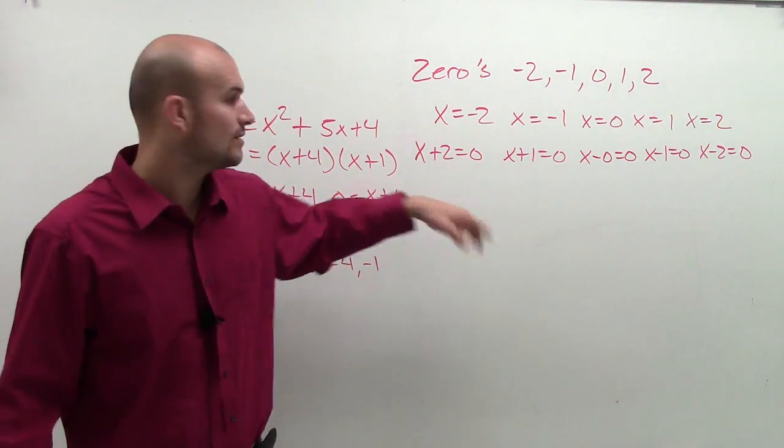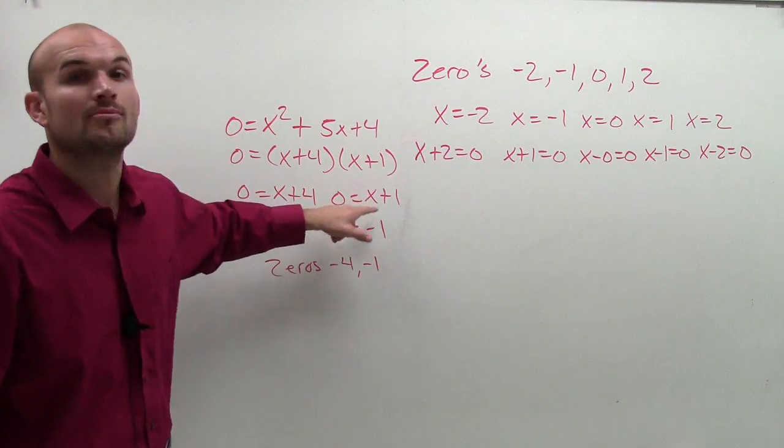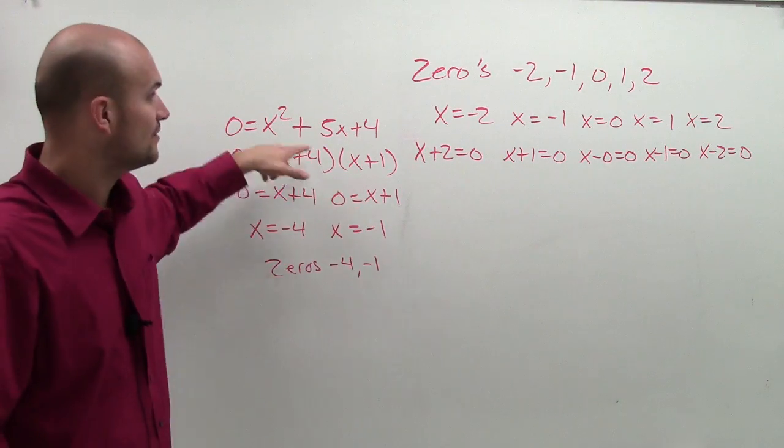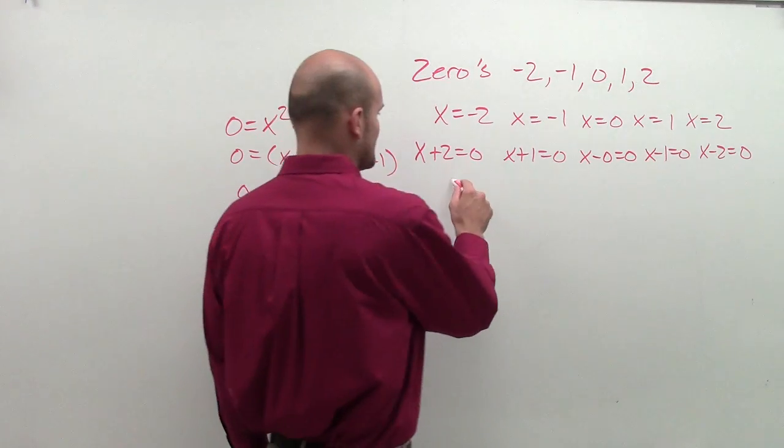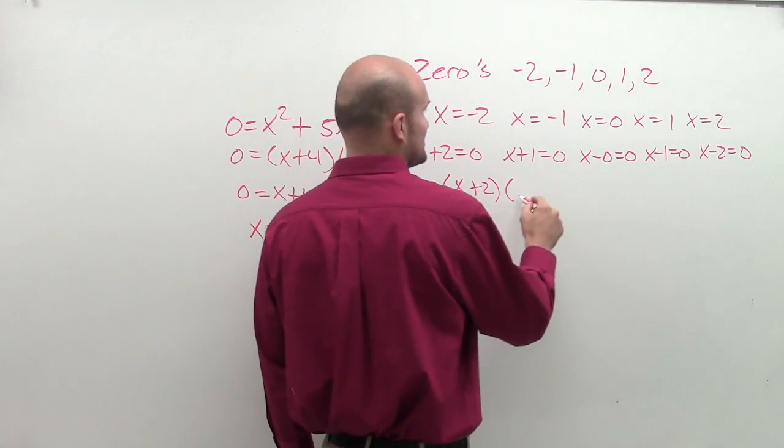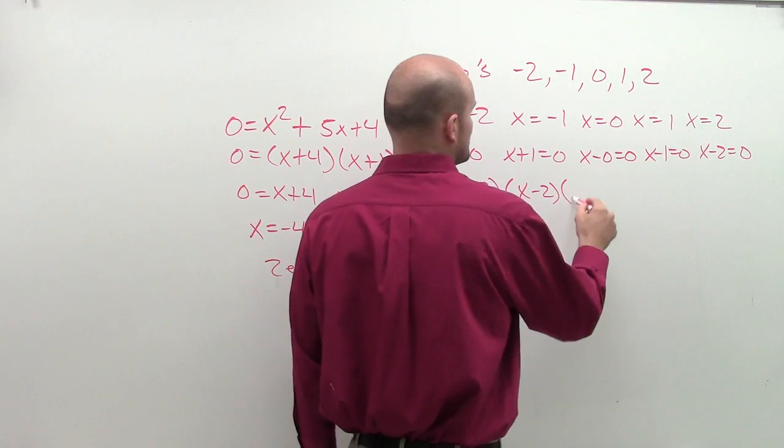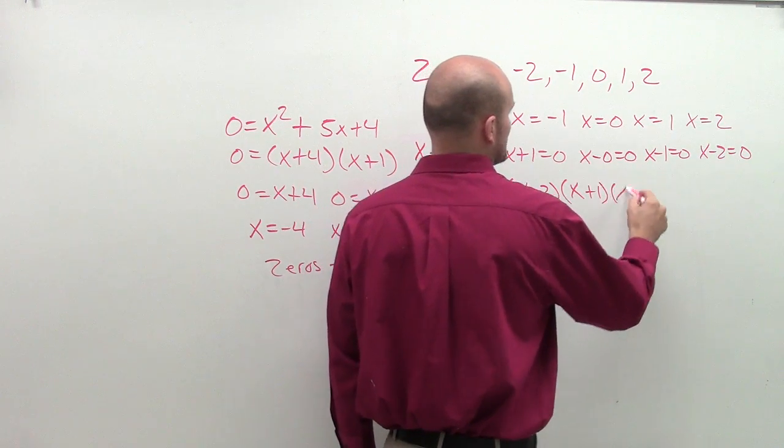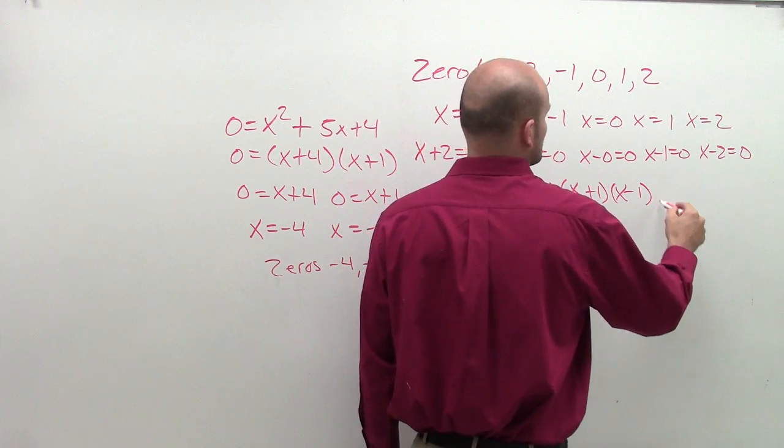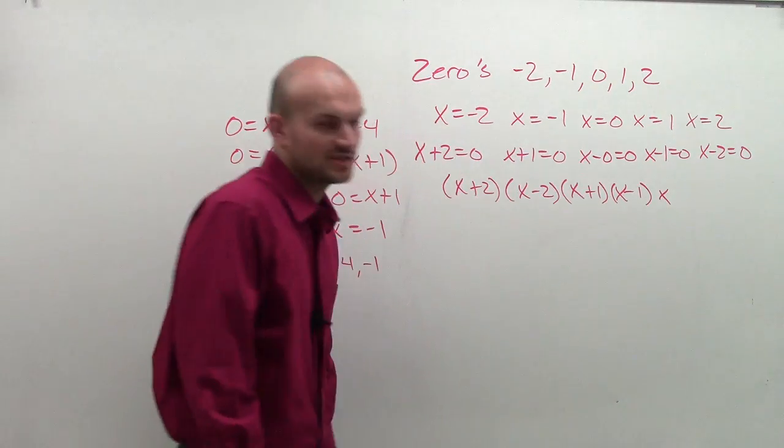So now we set them all equal to 0. And then once we set them all equal to 0, remember, we use the zero product property, so we can now write these as factors. So you could say x plus 2 times x minus 2 times x plus 1 times x minus 1 times x, because x minus 0 is just going to be x.